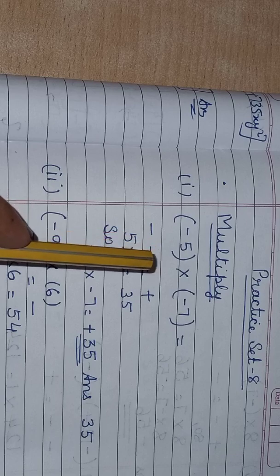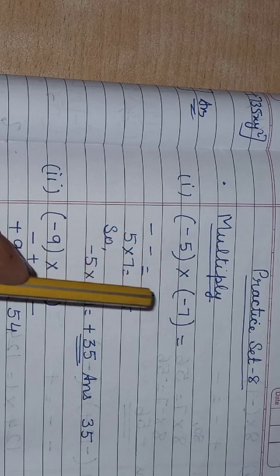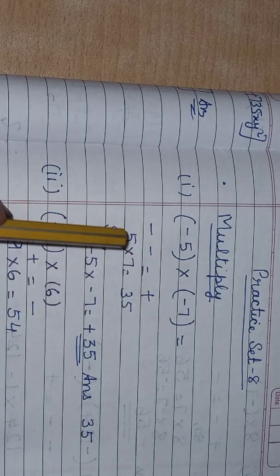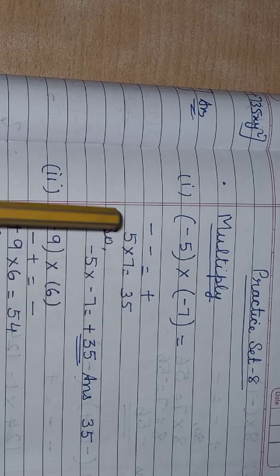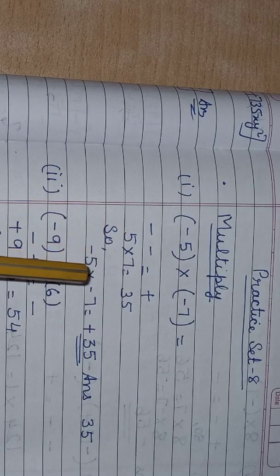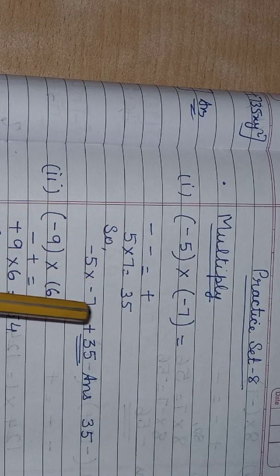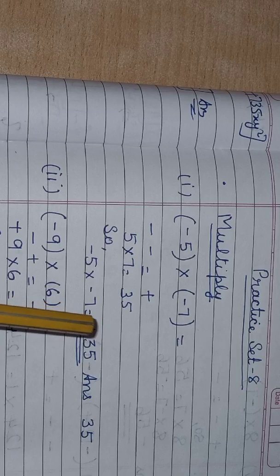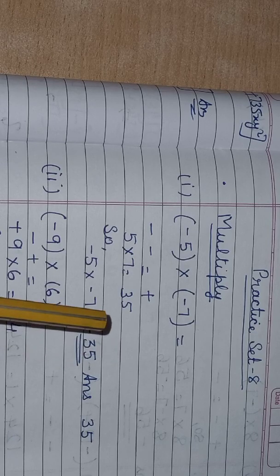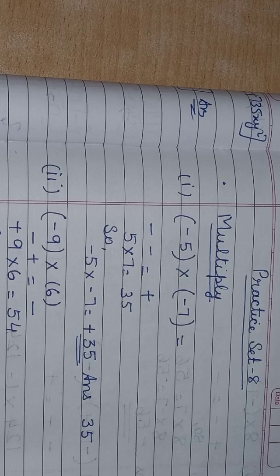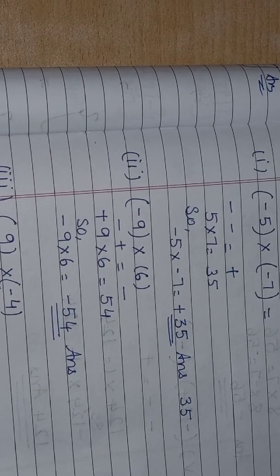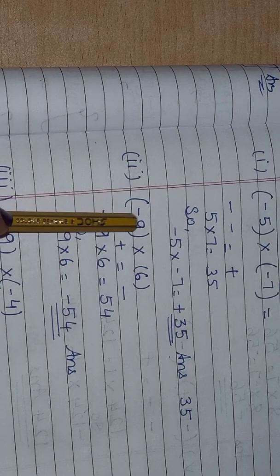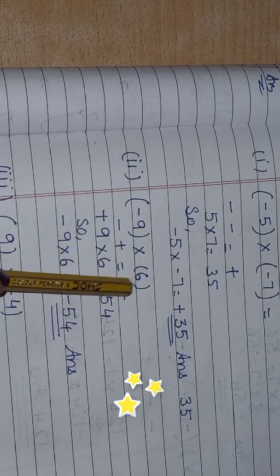Minus multiply minus is equal to plus. 5 into 7 — 5 sevens are 35. So minus 5 multiply minus 7 is equal to plus 35. Now the next one — second question: minus 9 multiply 6.